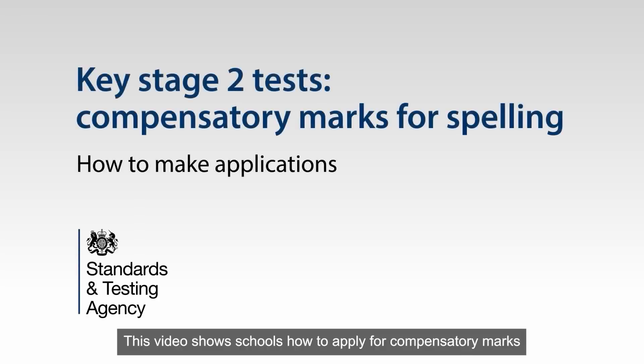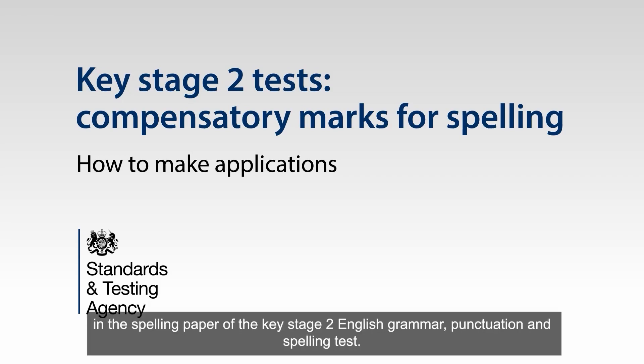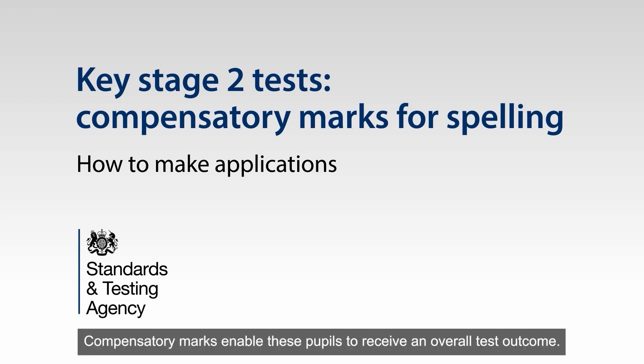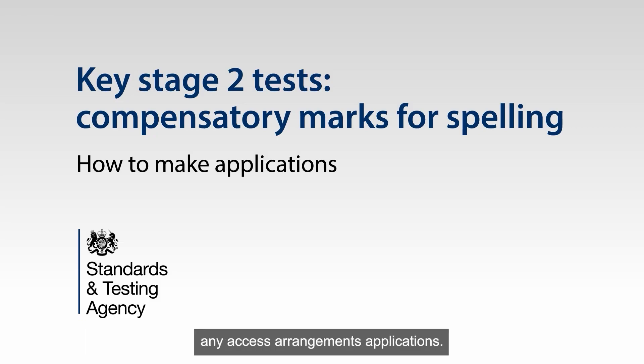This video shows schools how to apply for compensatory marks for pupils with a hearing impairment who are unable to participate in the spelling paper of the Key Stage 2 English Grammar, Punctuation and Spelling Test. Compensatory marks enable these pupils to receive an overall test outcome. Please note that you need to complete pupil registration before submitting any Access Arrangements applications.